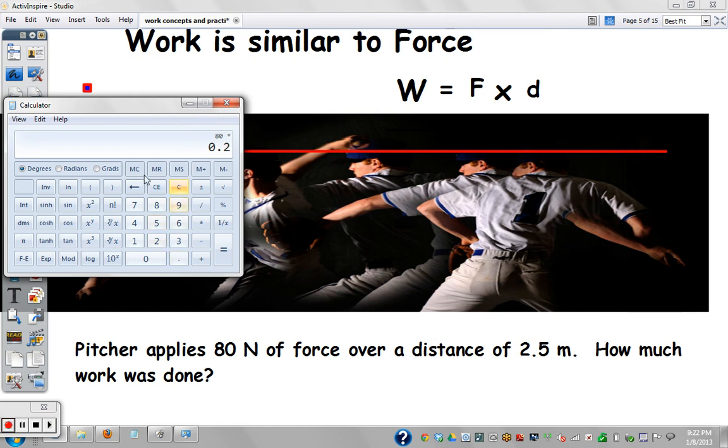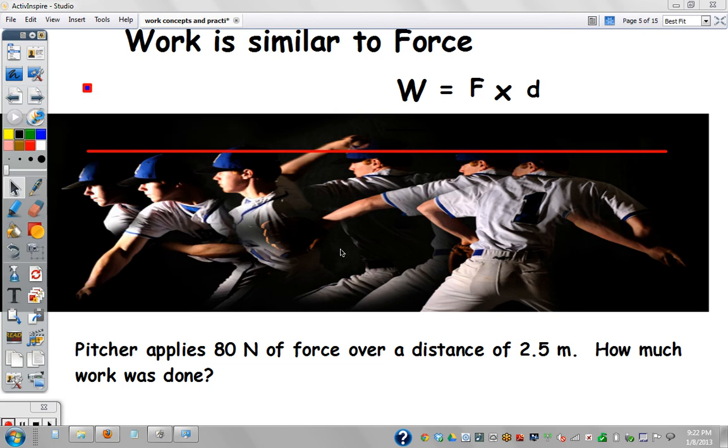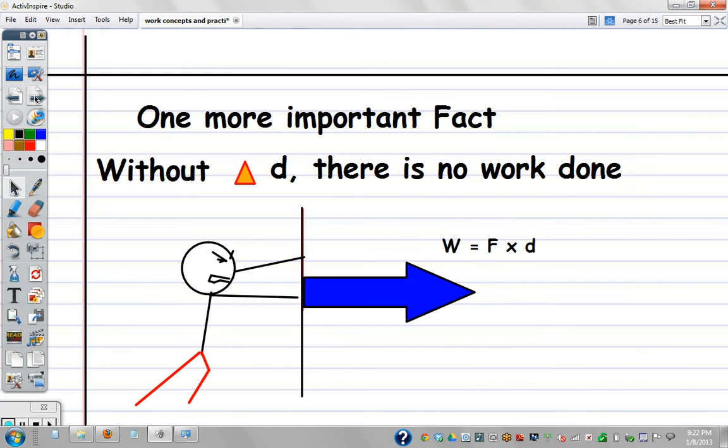Well, that would simply be 80 times 2.5. 80 times 2.5 is 2.5 times 80. So that would be 200 joules of work were done. So that's kind of like the type of, you'll get at least one math question for topic one on that part of the test. And it'll be something like this, using this formula.